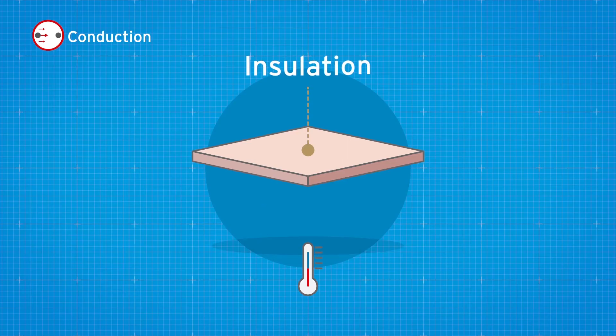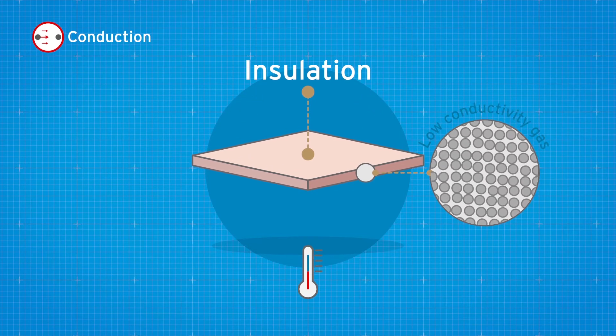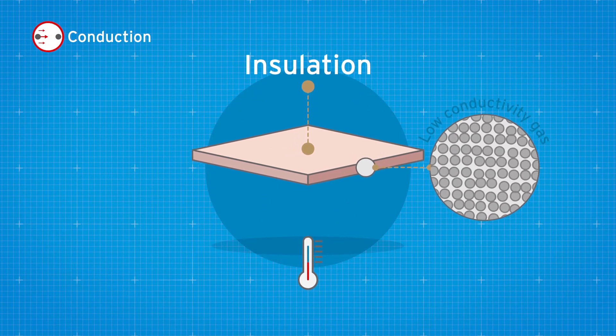The ability of a material to conduct heat depends on the material. Using a low-conductivity gas in insulation rather than just air further helps to reduce conduction.